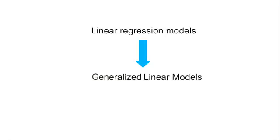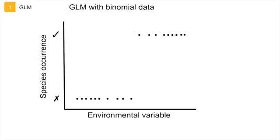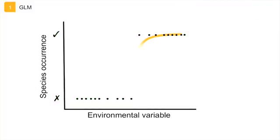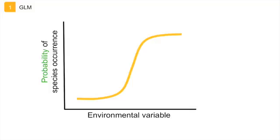In this case, a generalized linear model is used, which allows more flexibility in the distribution of the response. A generalized linear model with binomial data, such as the presence and absence of a species, is called a logistic regression. If we would draw a line through these data points, it would look like an S-shape, and this line represents the probability of species occurrence.